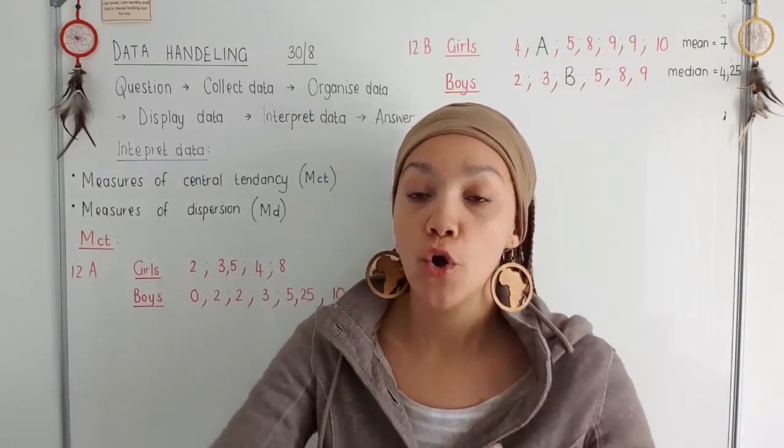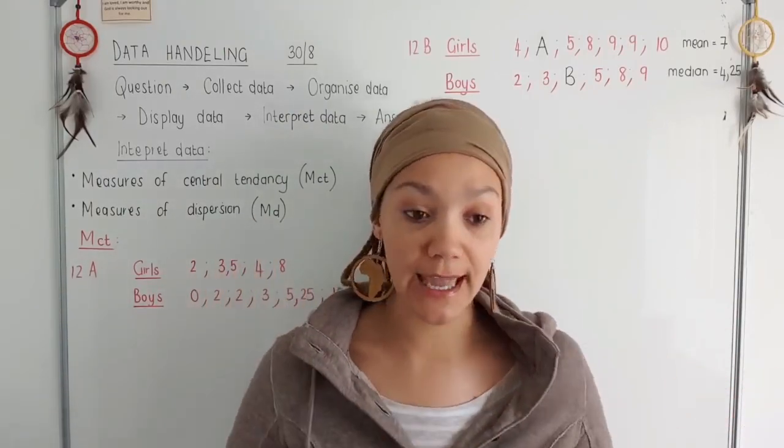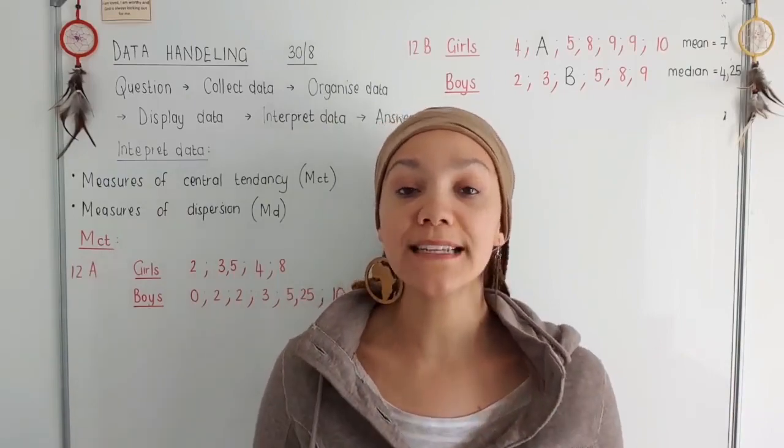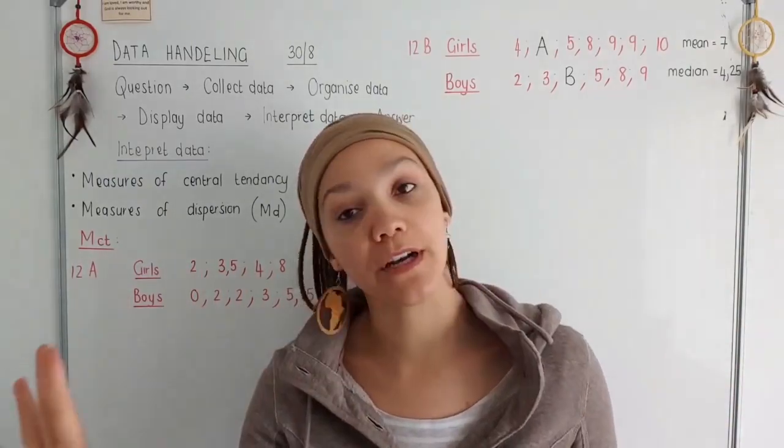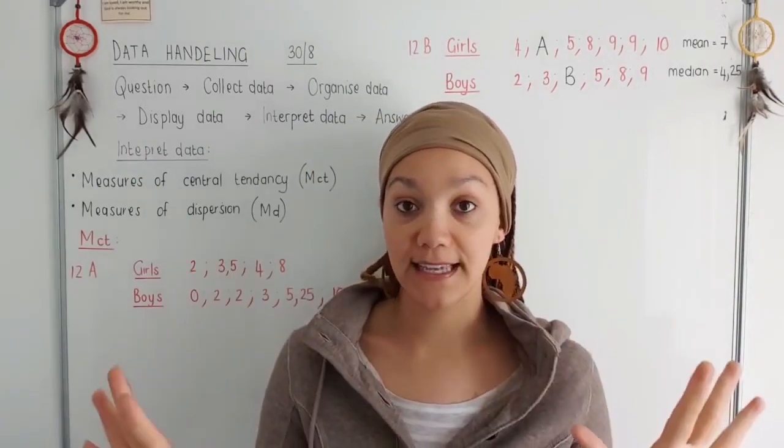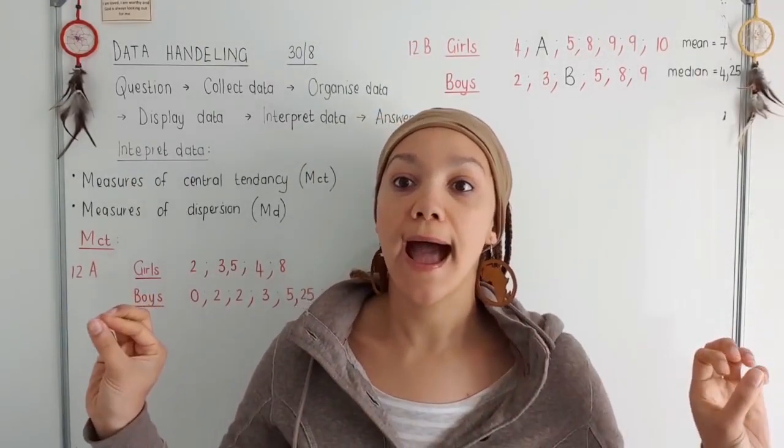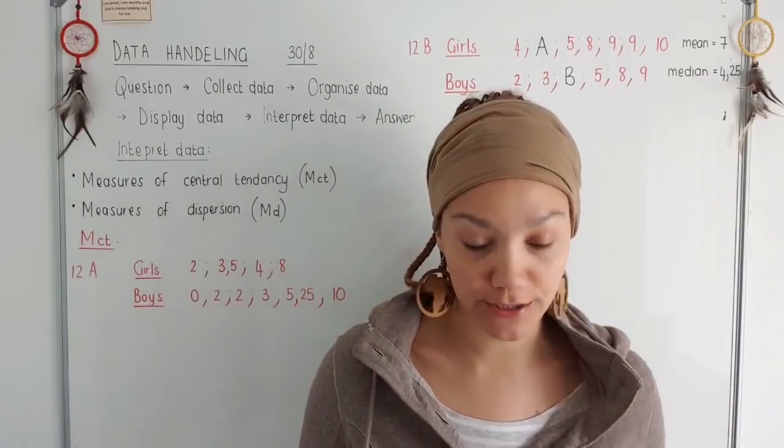Then we move to step number four, which is displaying the data. So we take everything that we have that we've organized and we can put it in a pie chart. We can put it in a bar chart, bar graph, et cetera, et cetera. So all of that has to do with how you display the data.